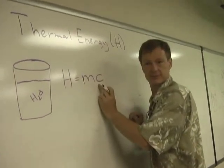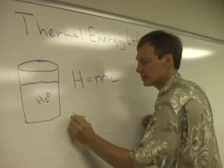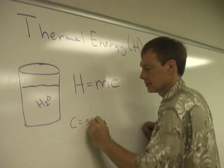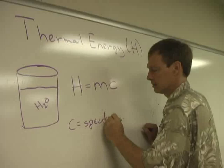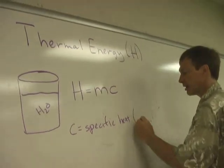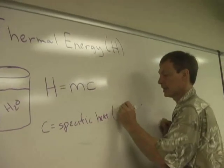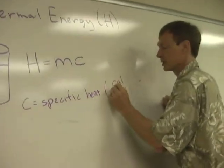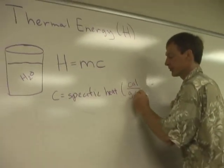This is the specific heat. C is the specific heat, and it has units of, in metric, calories per gram per Celsius degree.